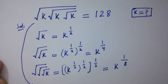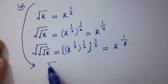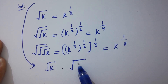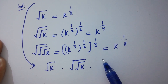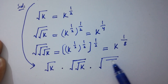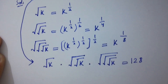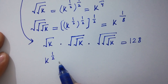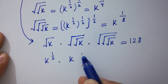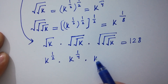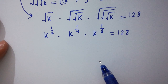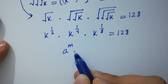This is the same as square root of k times square root of square root of k times square root of square root of square root of k equals 128, which is the same as k to the power 1 over 2 times k to the power 1 over 4 times k to the power 1 over 8 equals 128.